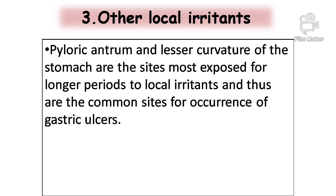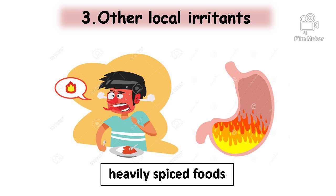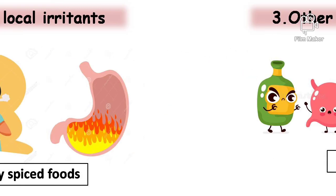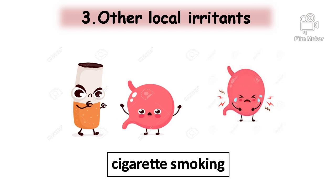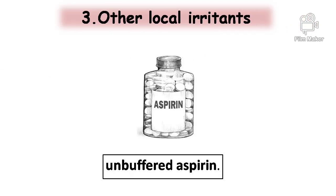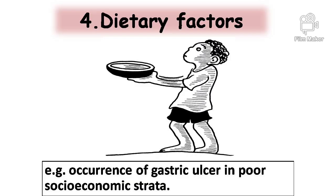Other local irritants: the pyloric antrum and lesser curvature of the stomach are the sites most exposed for longer periods to local irritants, and thus are the common sites for occurrence of gastric ulcers. Some local irritating substances include heavily spiced foods, alcohol, cigarette smoking, and unbuffered aspirin. Dietary factors: nutritional deficiencies have been regarded as etiologic factors in peptic ulcers, for example, occurrence of gastric ulcer in poor socioeconomic strata.